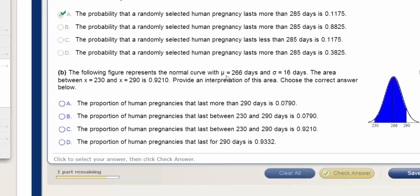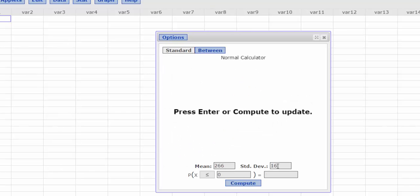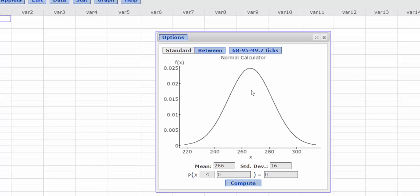Looks like we have a mean of 266 days and a 16-day standard deviation. So I've entered 266 and 16. If I press Compute, there's my normal curve.